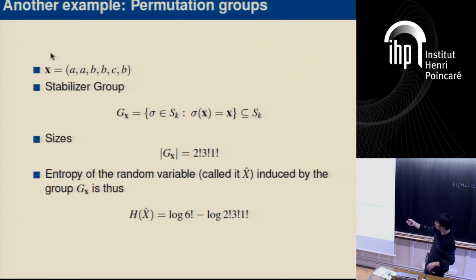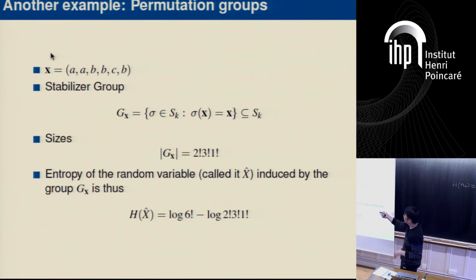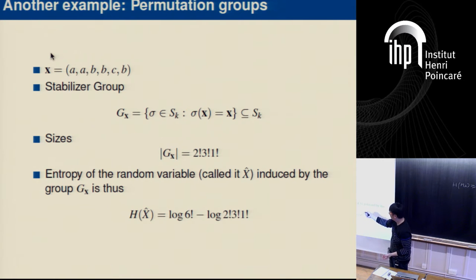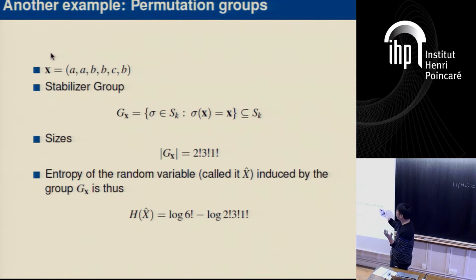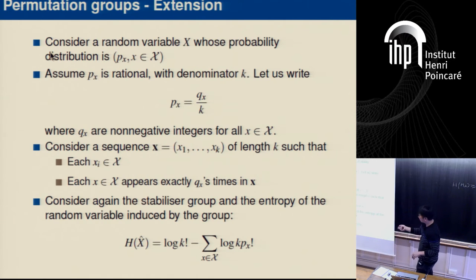To convince you this is correct, consider the example where k equals 6, qa equals 2, qb equals 3, and qc equals 1. So 2, 3, 1 — meaning 2 corresponds to k times qa, 3 gives k times qb, and 1 is k times qc. This is exactly the formula we get in the general case.